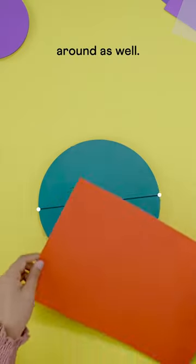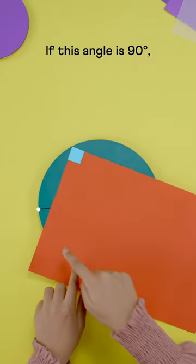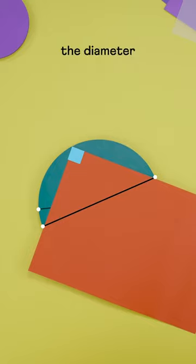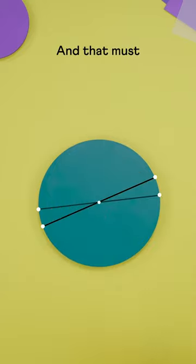And this works the other way around as well. If this angle is 90, then this must be the diameter of the circle and that must be its center.